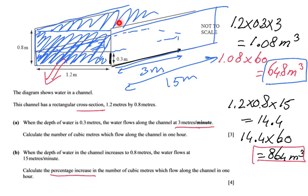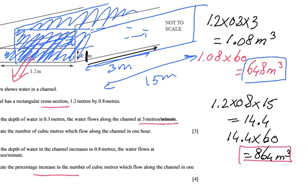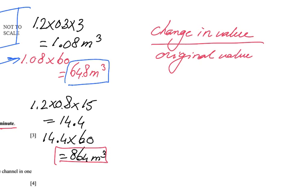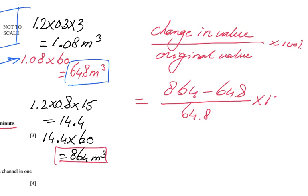But they're not asking me how much water leaves the channel per hour. They're asking me what is the percentage increase. And there is a definite increase. Percentage increase is the change in value over the original value times 100%. What is the change in value? Well, it is 864 now, it used to be 64.8. That's the change over the original value. What was it? What did it used to be? What is the original value? So it used to be 64.8. And to make it a percentage, we times it by 100 and put a percentage sign there. Well, that difference is 799.2 over 64.8 times 100 percent.